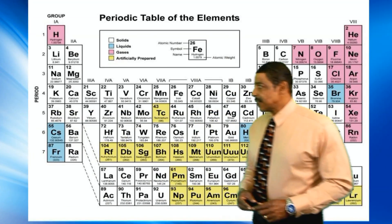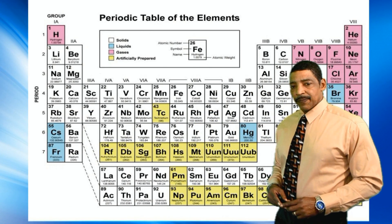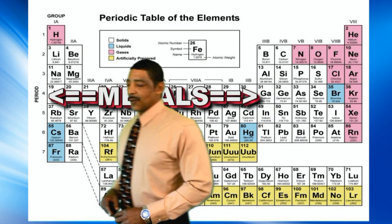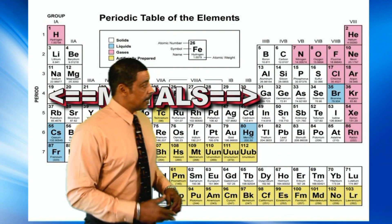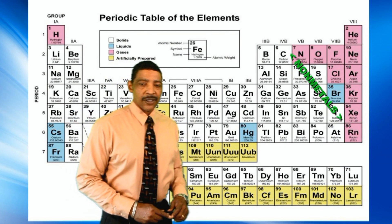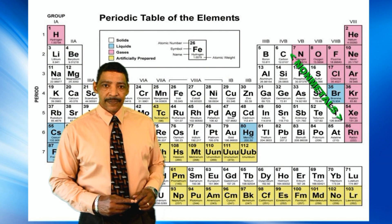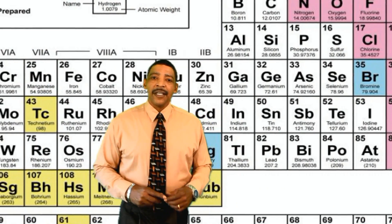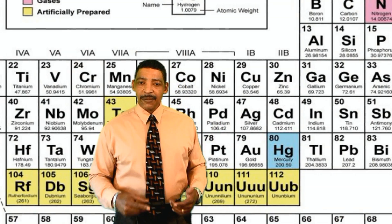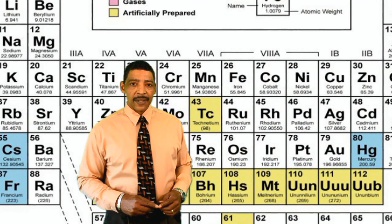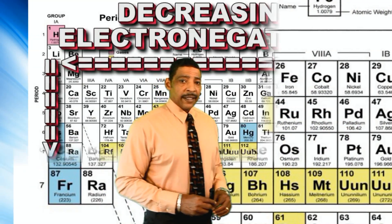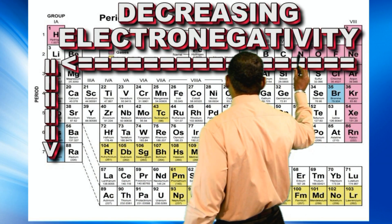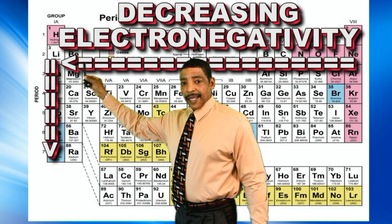The answer lies on the periodic table, where the metallic elements are written on the left side and the non-metallic elements are written on the right side. The ability to lose or gain electrons is directly related to an element's electronegativity, which decreases from the right to the left side and downward.